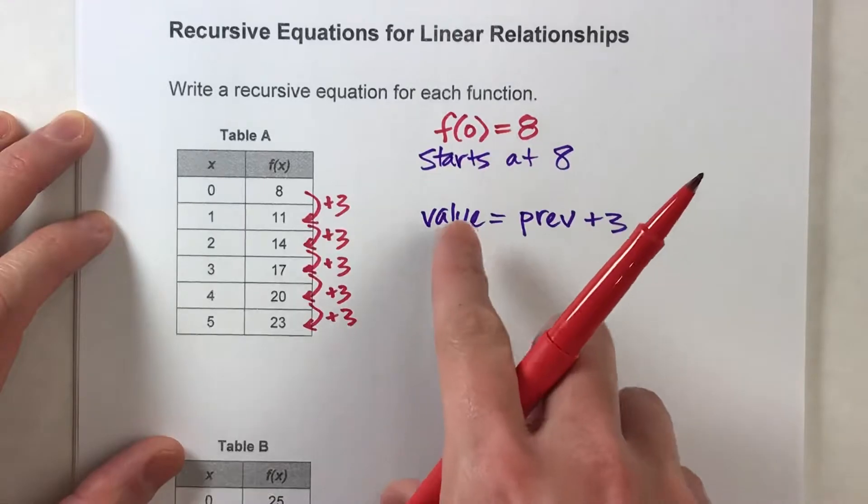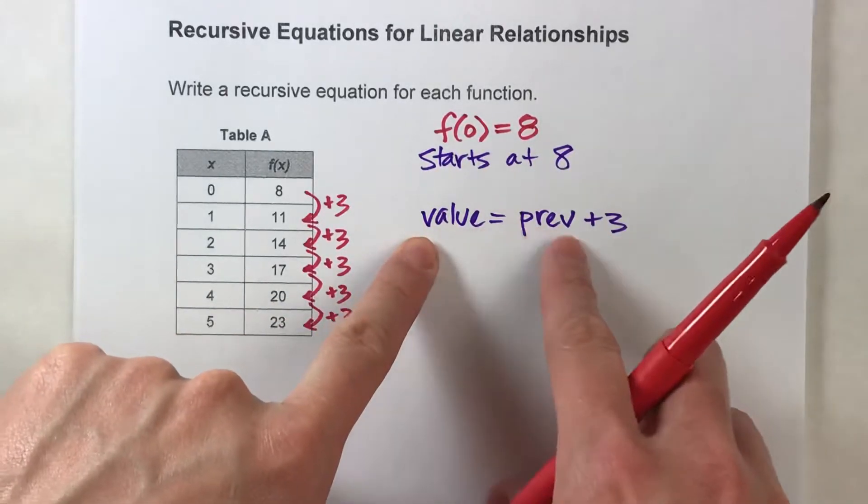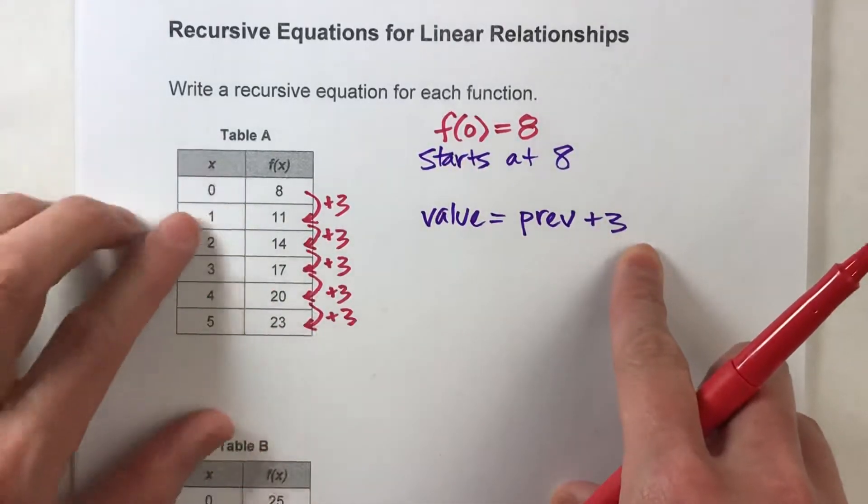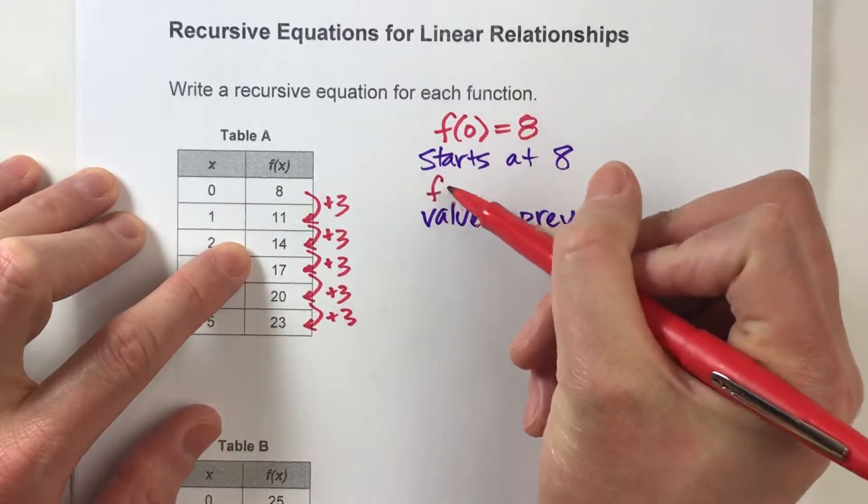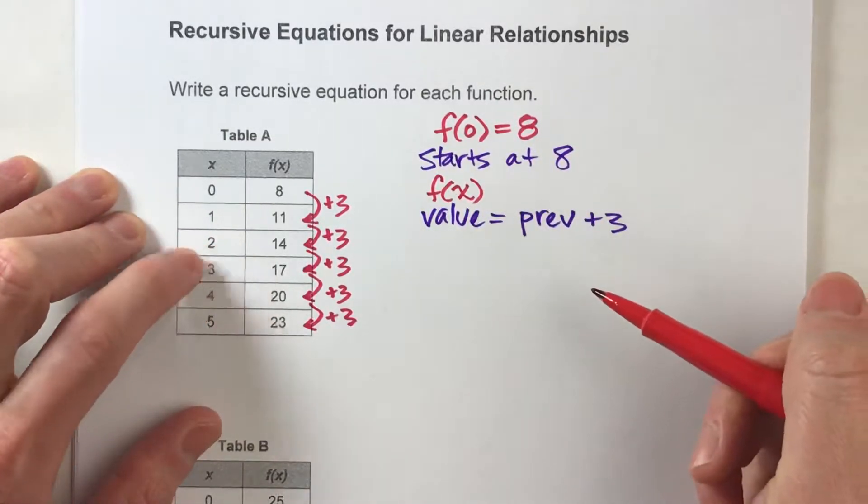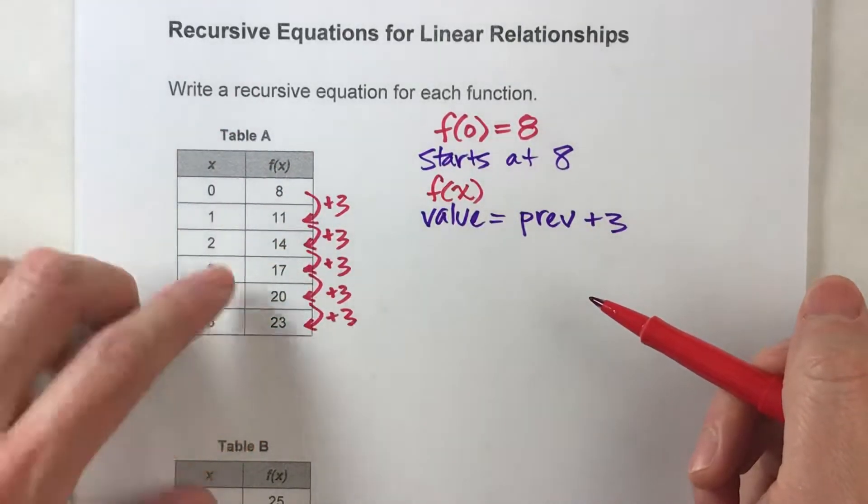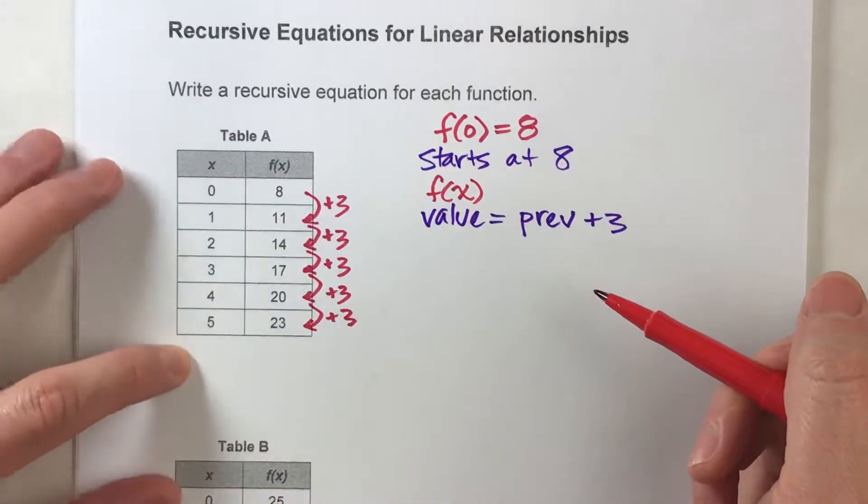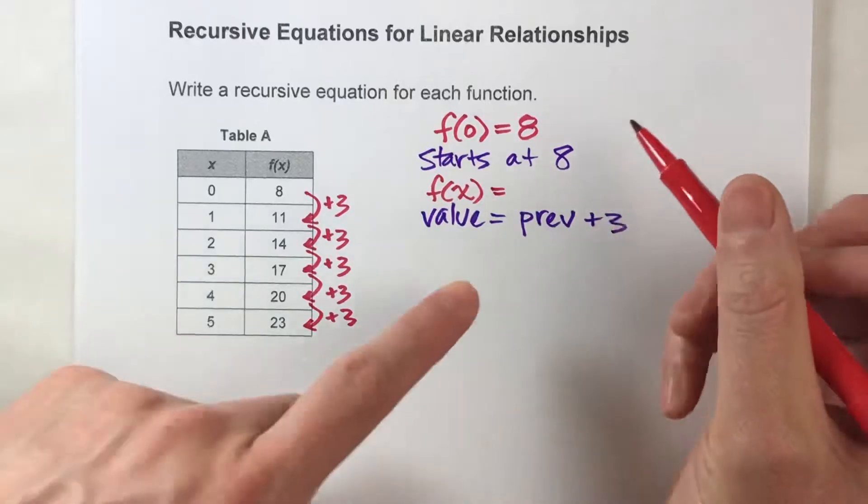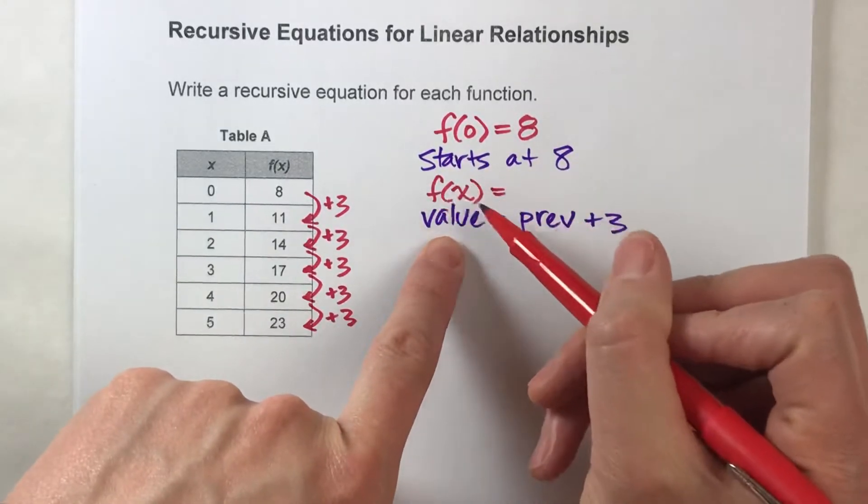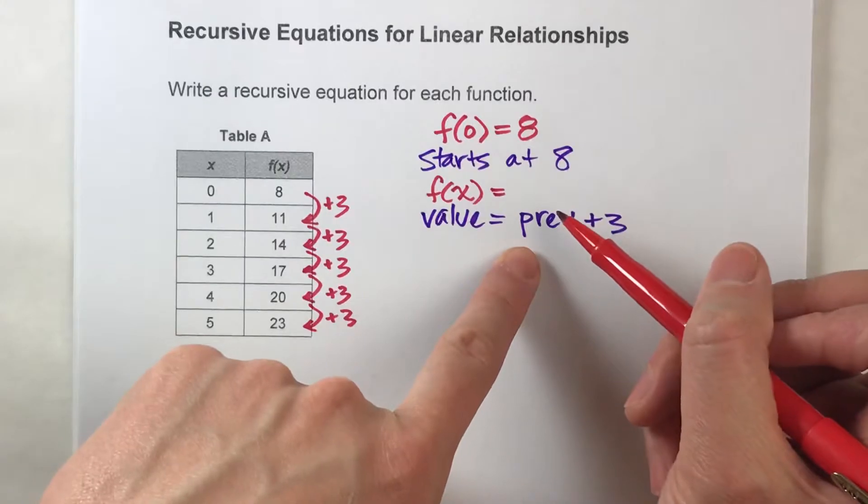Now, the second part, to find any value, we take the previous value and add 3 to it. So to find any value, any value is going to be our f of x, that's what we're trying to find, any f of x, no matter what x is. So if f of x is the value we're trying to find, we start by taking the previous value.